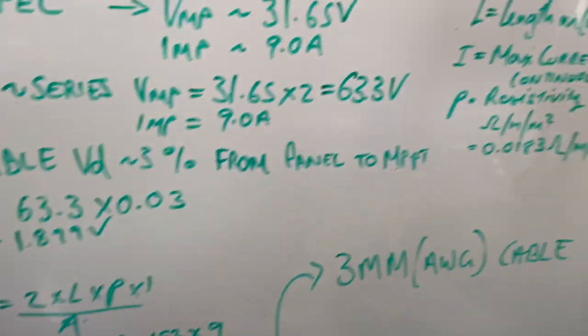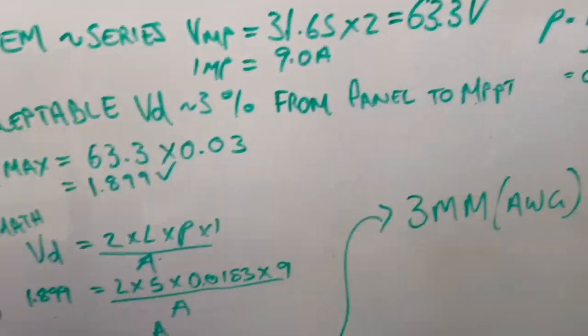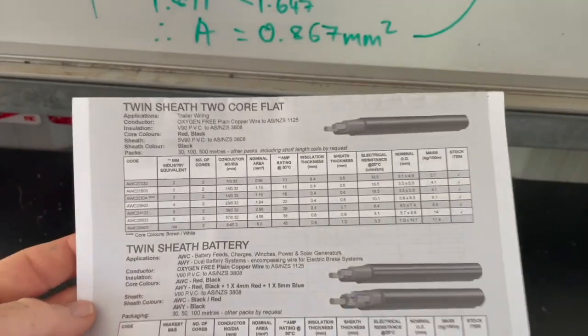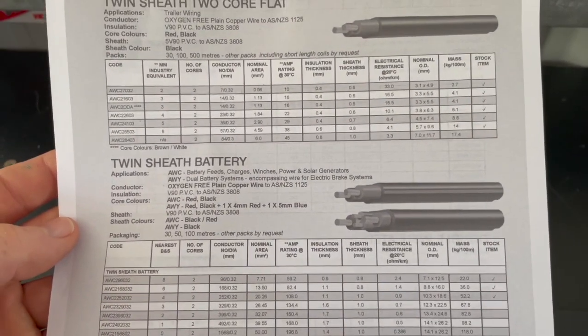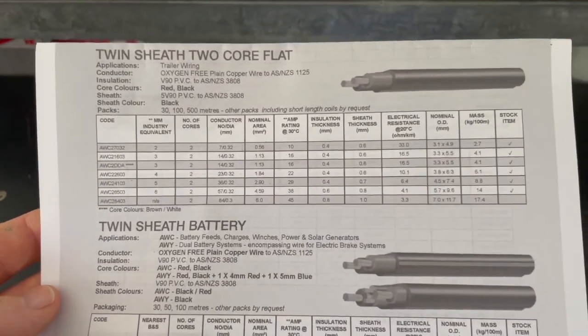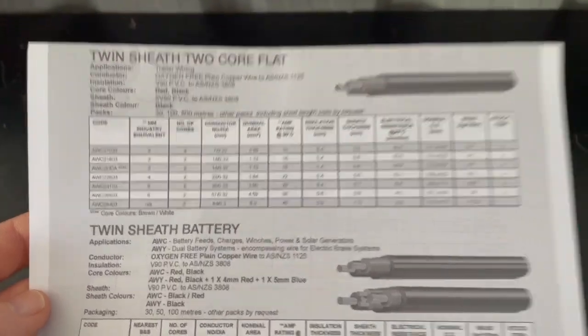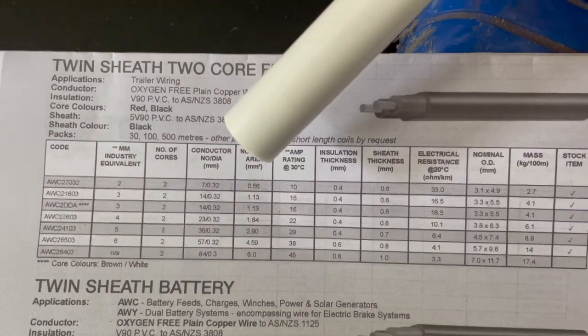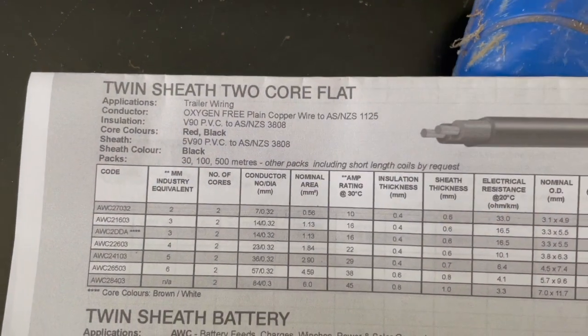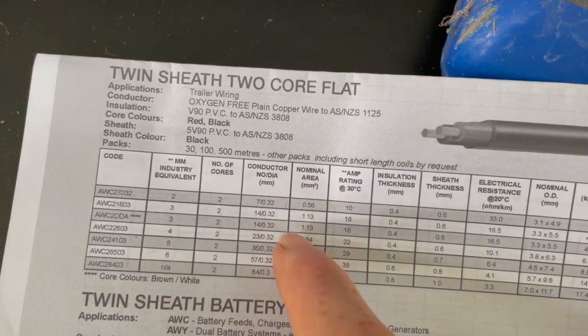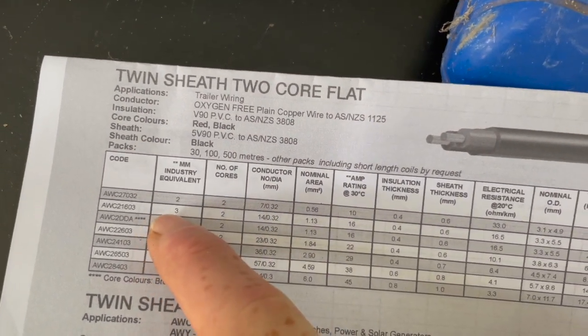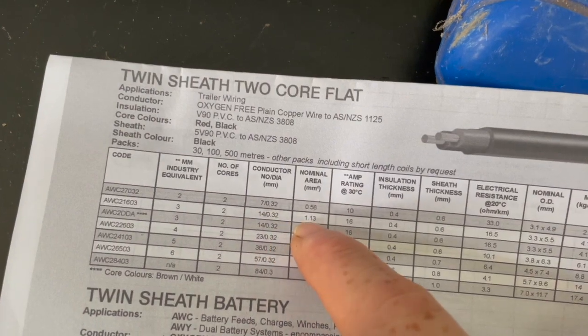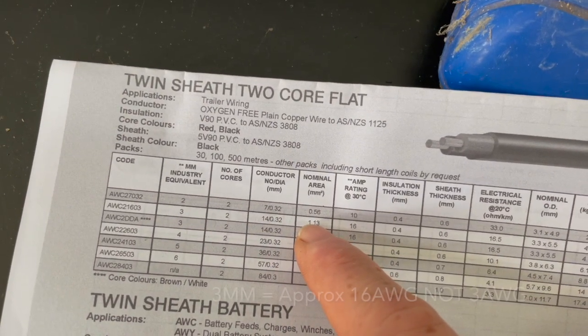So I recommend whenever you're doing this, there's a company called Tycab, I just go to their specifications online. We want the nominal area, which is that column, we needed 0.867, so we'll have to go up to this cable here, so that's a 3mm cable, it's got a cross sectional area 1.13 millimeters squared, can carry 16 amp. Therefore we get a 3mm AWG-8.